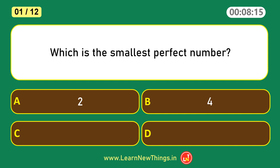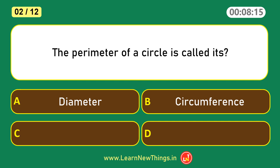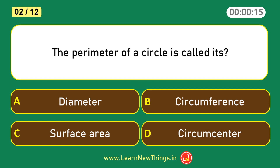Which is the smallest perfect number? 6. The perimeter of a circle is called its circumference.